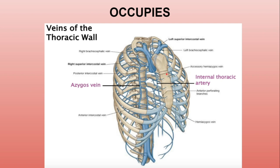The azygous vein mainly occupies the thoracic wall and the upper posterior abdominal wall. In this diagram you can see the azygous vein, along with two main associated veins — the hemizygous vein and the accessory hemizygous vein, which are tributaries of the azygous vein.